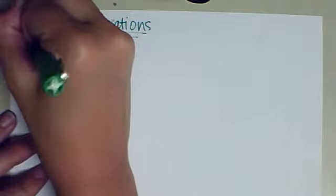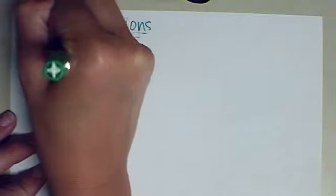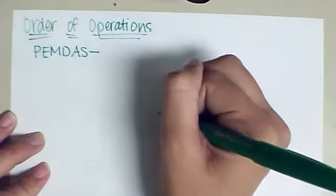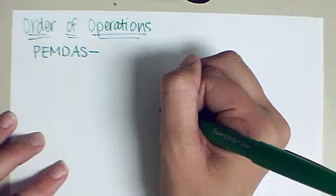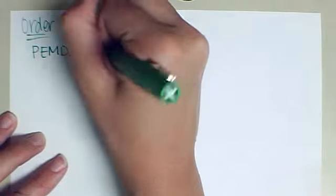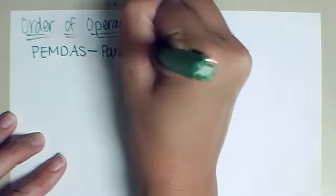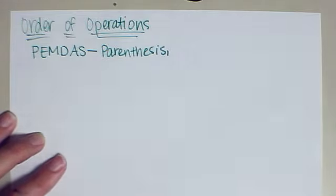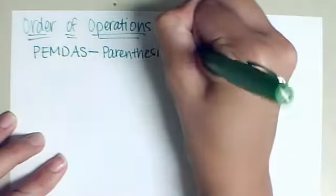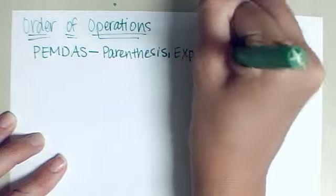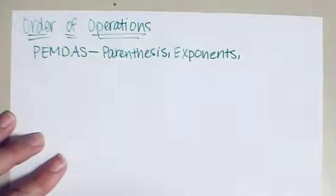To do this, we use what we call PEMDAS, which is just an acronym to tell us the order in which we should solve our equations or expressions. P stands for parentheses, so you do anything that is inside of the parentheses in a problem. E stands for exponents. The next step is to do anything involving exponents.